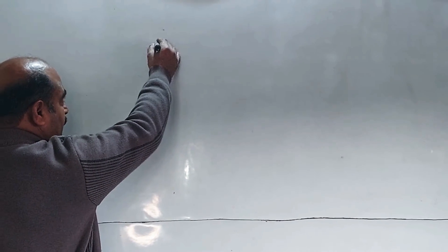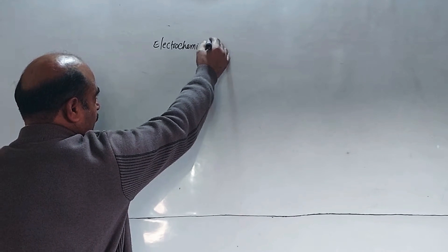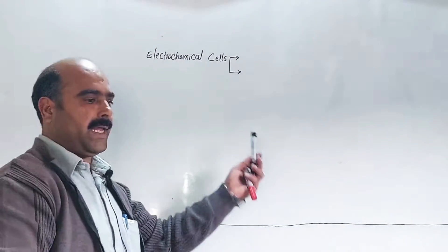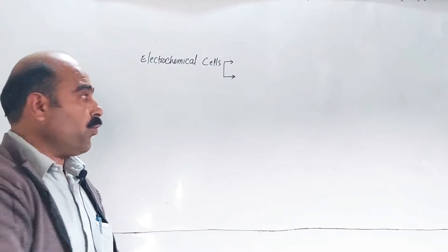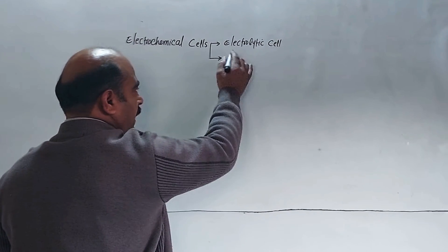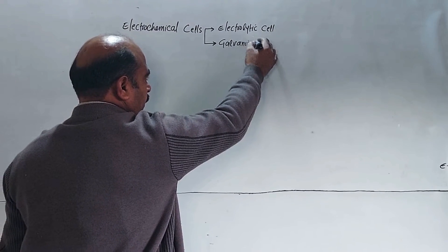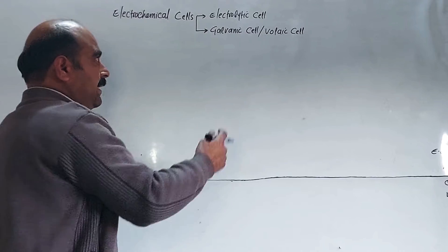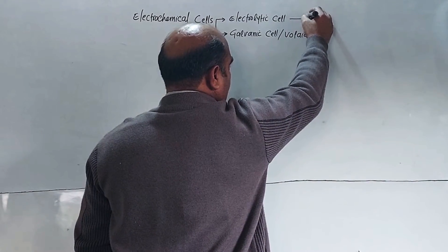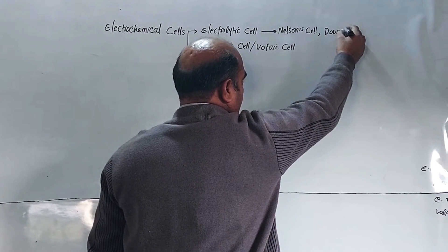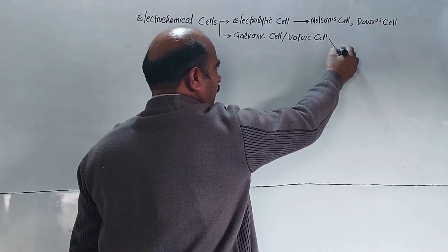The next topic is the types of electrochemical cells. Electrochemical cells are of two types: one is called electrolytic cell and the other one is called galvanic cell. The galvanic cell is also called voltaic cell. Examples of electrolytic cells are the Nelson cell and the Down cell. The example of a galvanic cell is the Daniel cell.